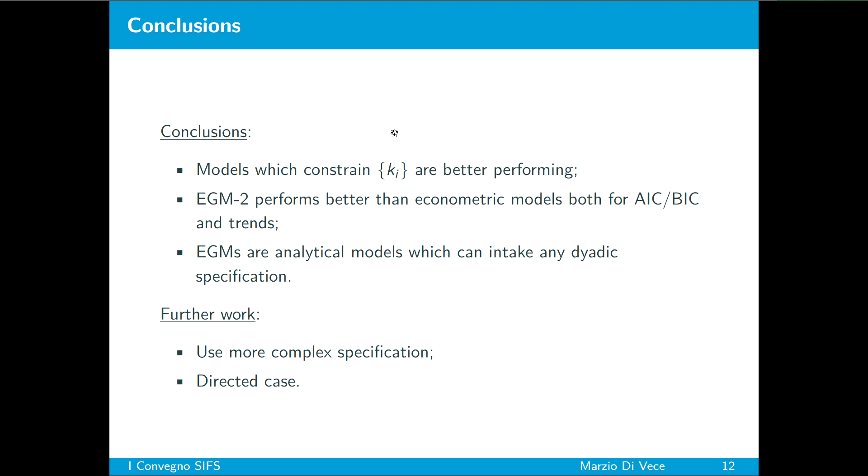For EGM-2 and negative binomial we see that the weighted clustering coefficient is defined as a linear function of the weights so it's usually well reproduced by all the models that reproduce well the weights. Instead in the network statistics where the reproduction of the network structure is the main factor we see that while negative binomial performs very below expectations, the EGM-2 performs very well in reproducing the trends. Finally we saw that the models which constrain the degree are better performing both for selection criteria and for the reproduction of trends, which can be seen as a confirmation of the so-called irreducibility conjecture. Then EGM-2 performs better than econometric models both for selection criteria and trends. EGMs are analytical models, a byproduct of the maximum entropy principle which can take any dyadic specification and we can develop more this work using more sophisticated specification and developing the case for the directed networks. Thank you very much.